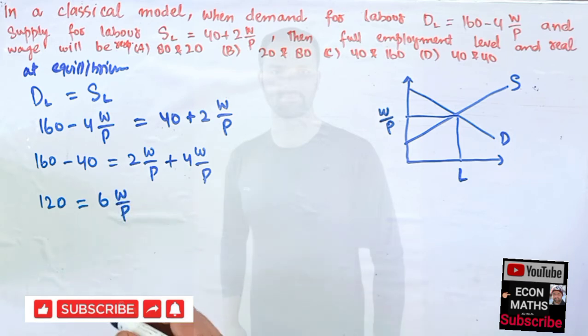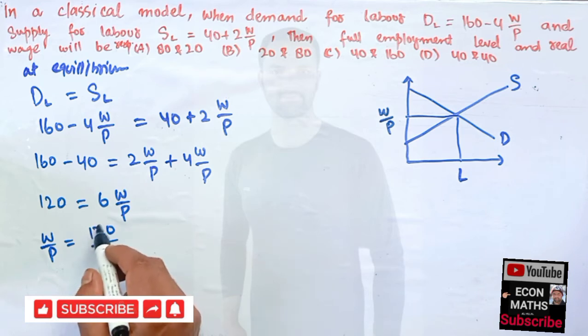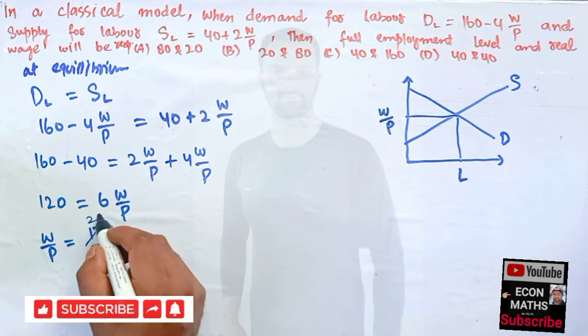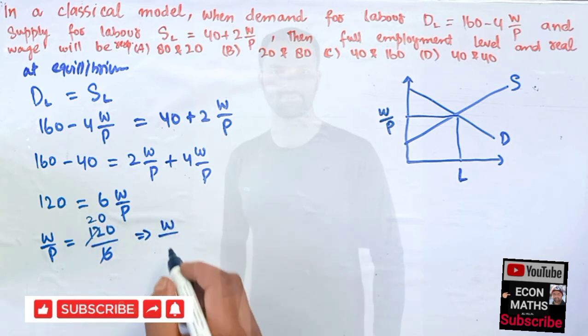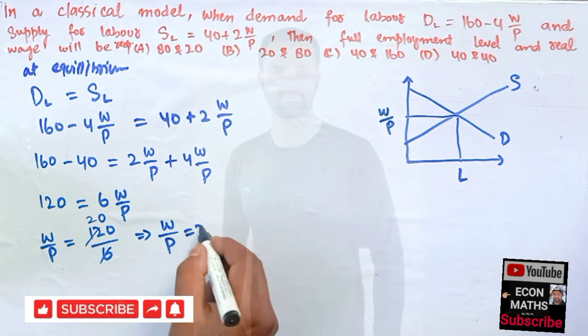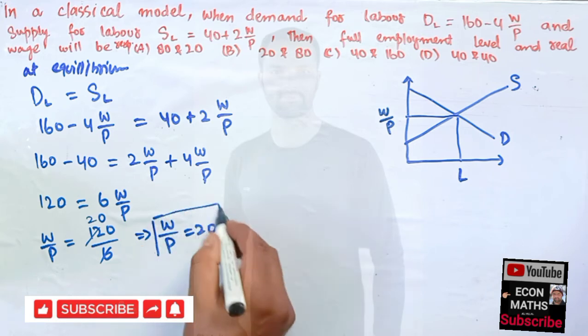So W/P, the real wage, equals 120/6. This comes out to be 20. So our equilibrium level of real wage would be equal to 20.